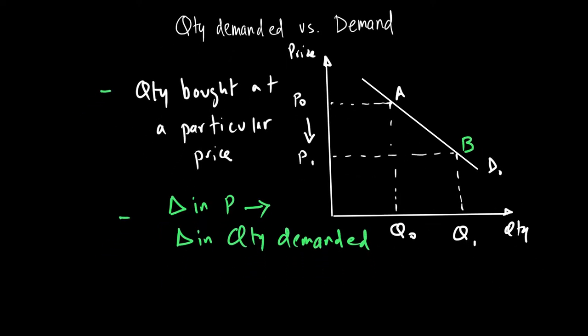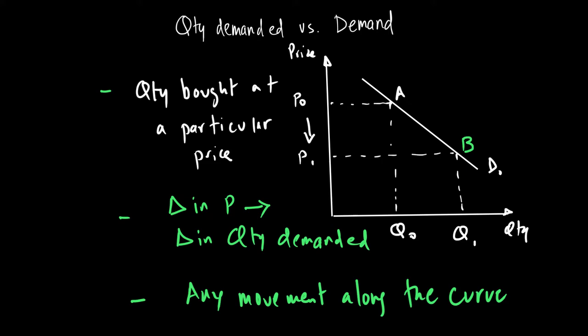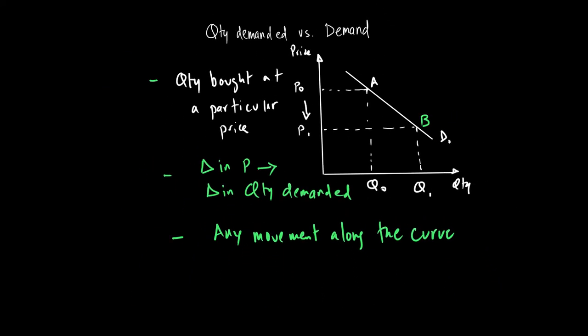We can also say that any movement along the curve will result in a change in quantity demanded. So now let's talk about what will change demand. We know that quantity demanded is changed through any change in price, because that will result in a movement along the demand curve.